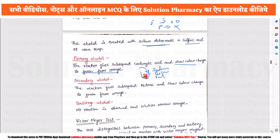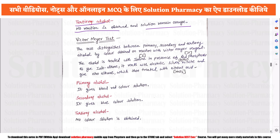For secondary alcohol, the product is a ketone. The color change from orange to green is also observed. For tertiary alcohol, no reaction occurs — the solution remains orange with no color change.